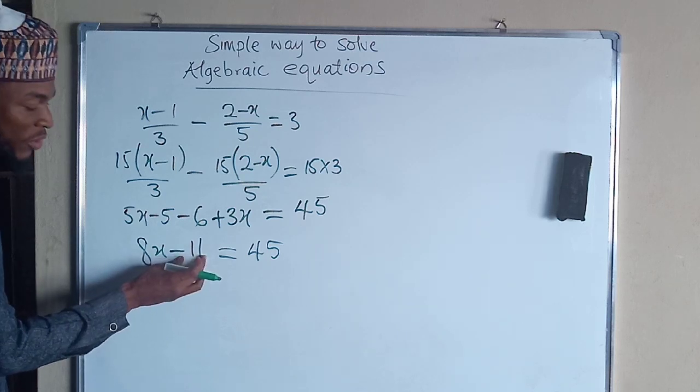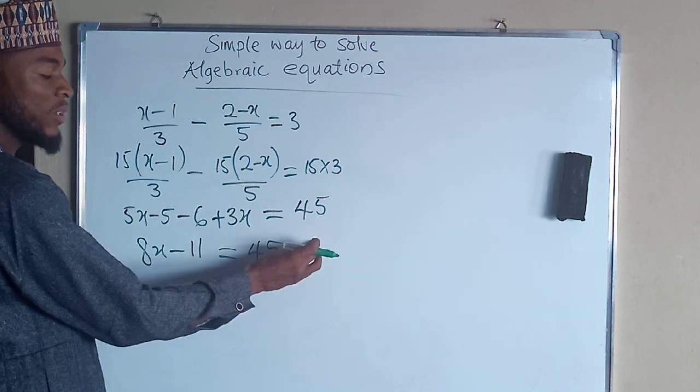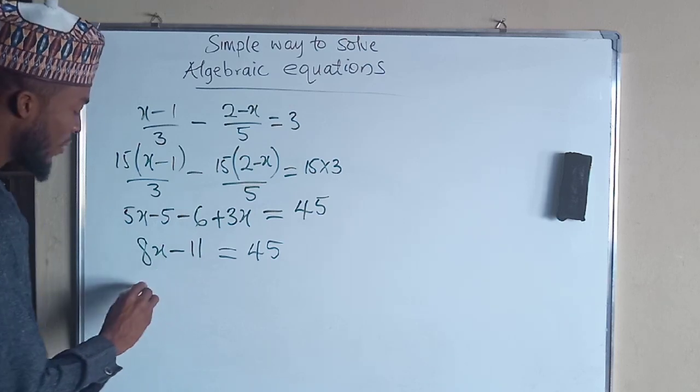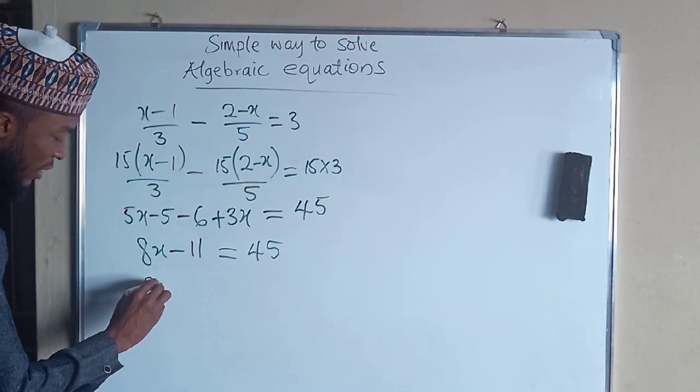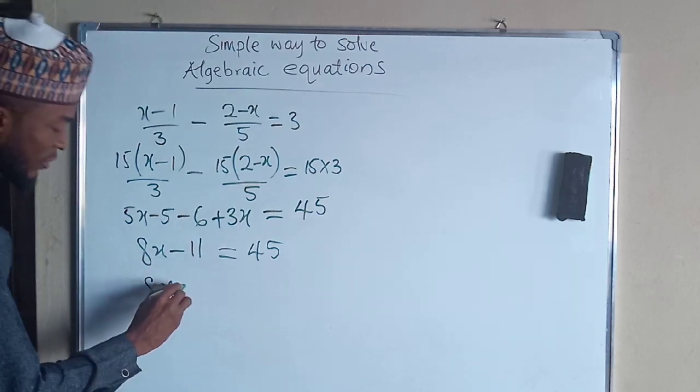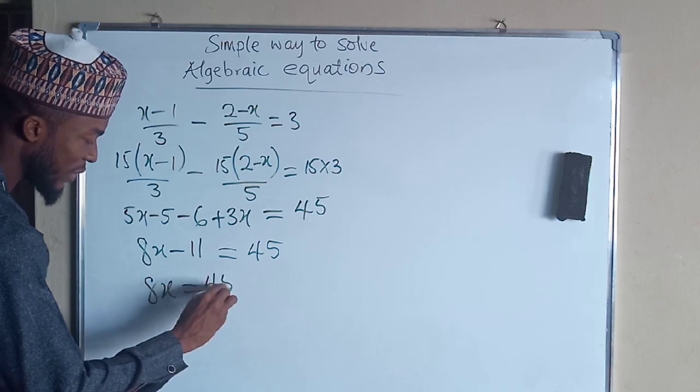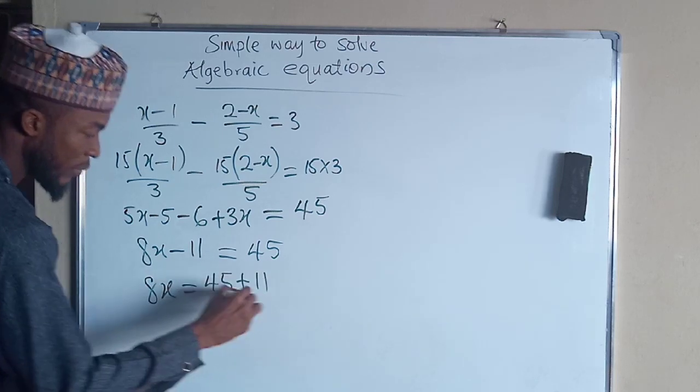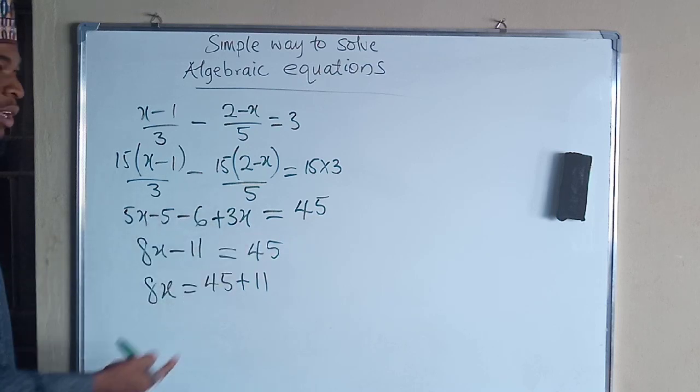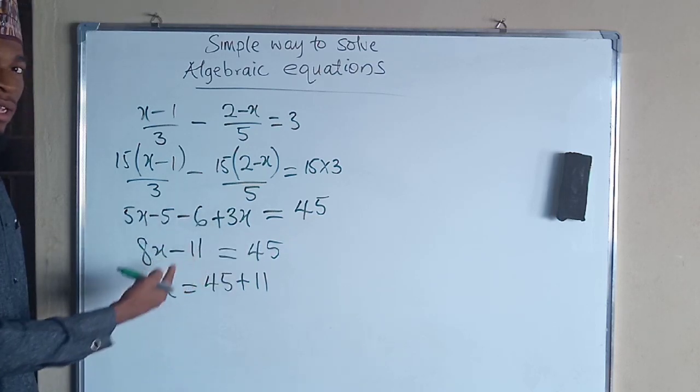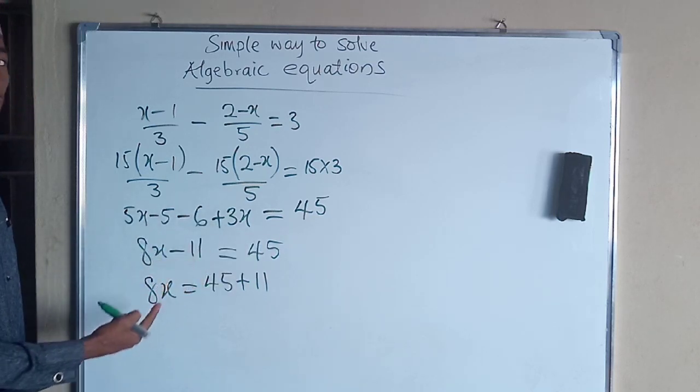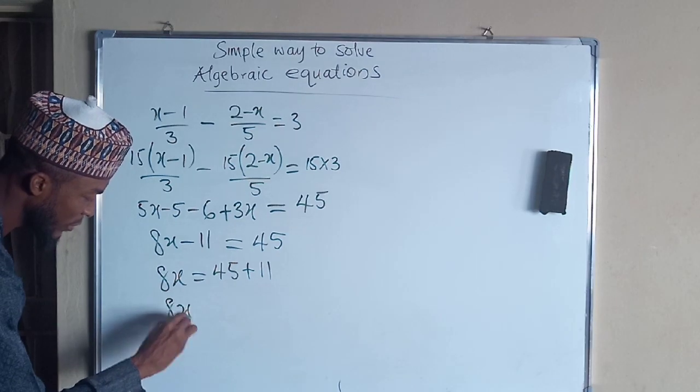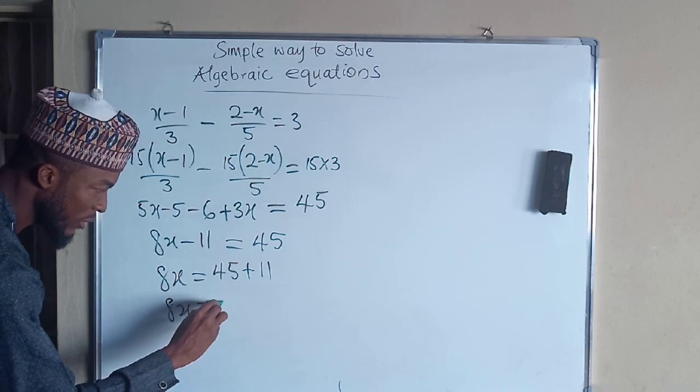Now we are going to take this negative 11 to the right hand side so that we have only 8x on the left hand side to be equal to 45 plus 11. Whenever a term crosses equality sign, whatever sign is attached to that particular term will change. So 8x is equal to now 56.